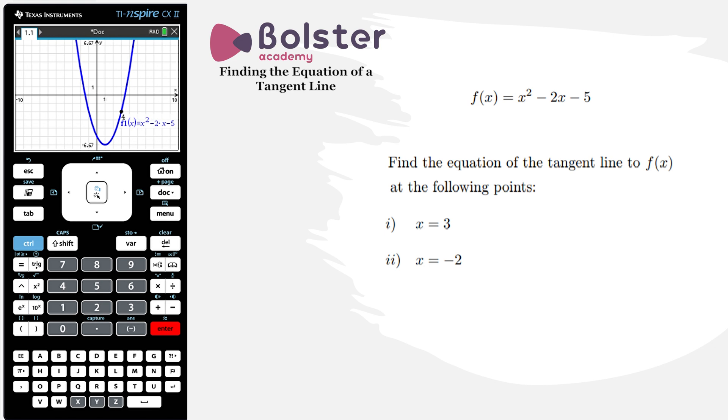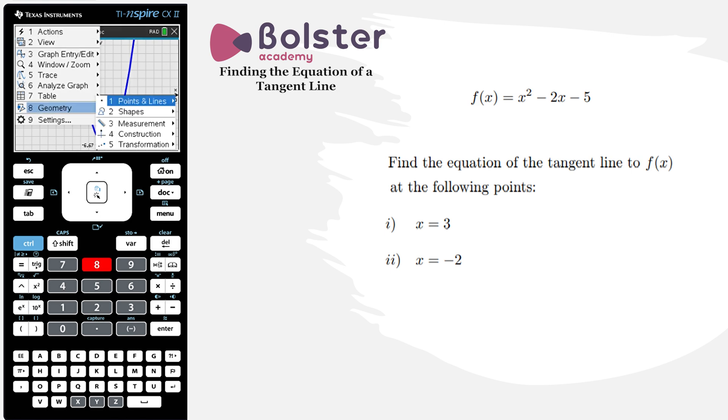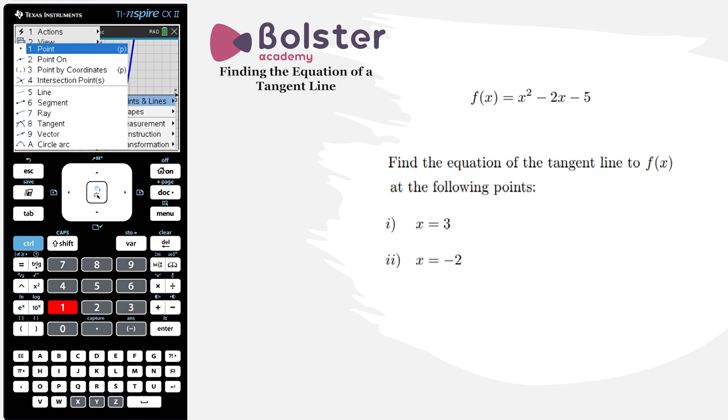So now we go into menu, we choose option number 8 which is our geometry settings. This is the new functionality that we have in documents that we did not have in scratchpad. Now we choose points and lines. I'm going to choose option number 8 tangent.